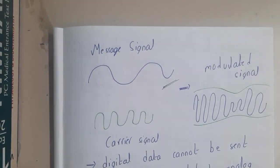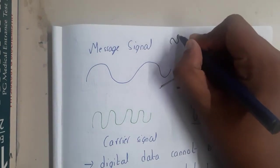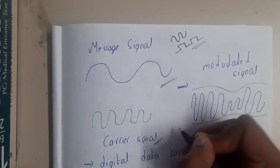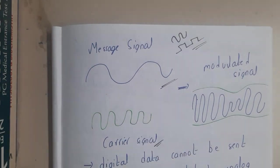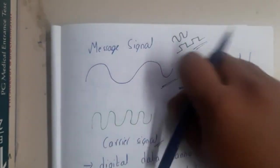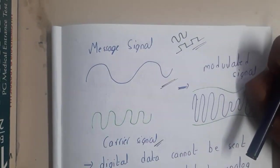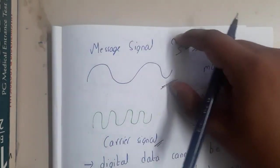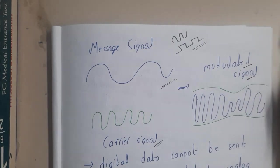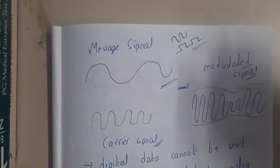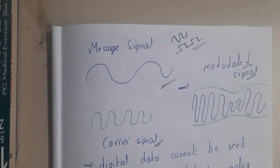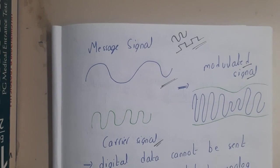The message signal we want to send could be of an analog type or a digital type. If you combine this signal with a carrier signal — think of the carrier signal as a box or a delivery boy — it will carry the message signal and convert it into a transmittable signal sent through the medium. So your message signal combined with the carrier signal produces a modulated signal, which is transmitted in the air.